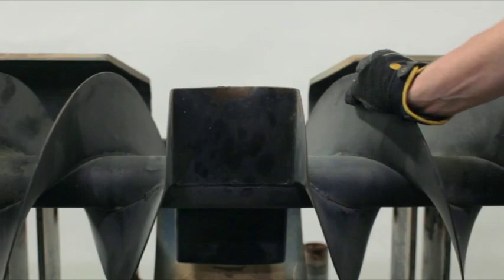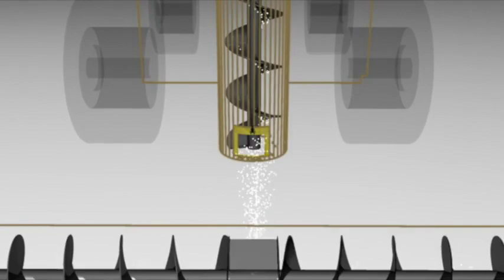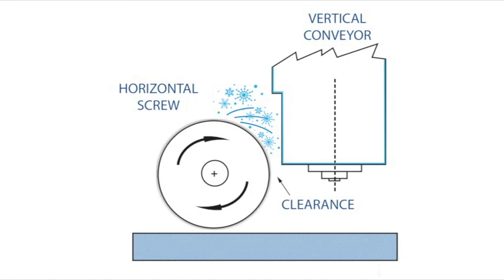Bent auger paddles can cause poor performance. New paddles which are flat are much more effective at delivering the snow into the vertical conveyor. This bent condition may be caused by the horizontal auger hitting an object or even the bottom of the vertical conveyor housing. The following explanation and illustrations may help you avoid this problem.